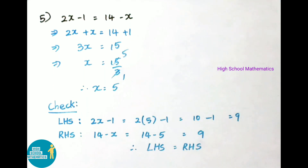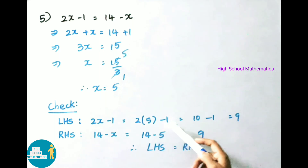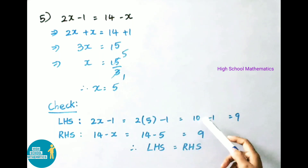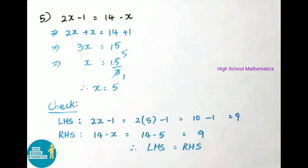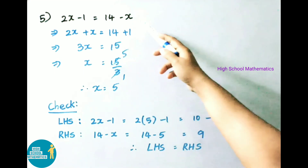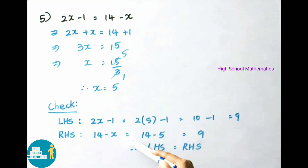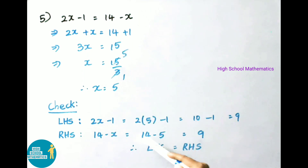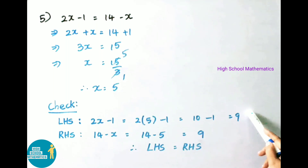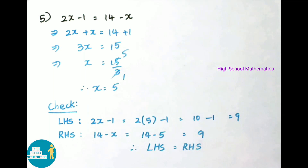Check: LHS is 2X − 1 = 2 × 5 − 1 = 10 − 1 = 9. RHS is 14 − X = 14 − 5 = 9. LHS and RHS both equal 9. Therefore LHS = RHS.